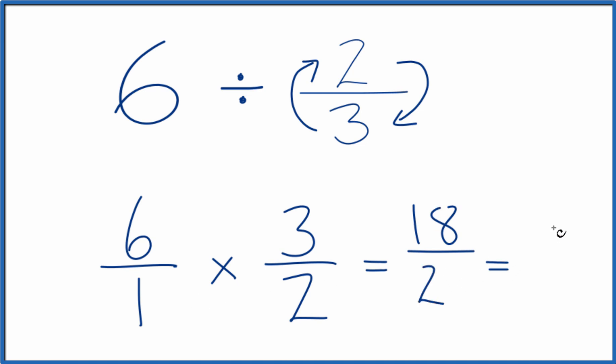And 18 over 2, that's just 9. So in answer to our question, when we divide 6 by 2 thirds, we get 9.